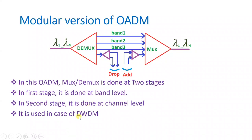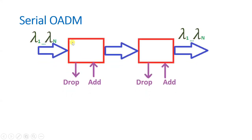Let us see the third type of OADM — serial OADM. As the name indicates, in serial OADM we connect OADM modules in series. Here we have module 1 and module 2. The optical cable carries wavelengths lambda 1 to lambda n, and by having one module we drop one wavelength and add one wavelength. By connecting more modules in series we can increase the number of wavelengths that can be dropped and added.